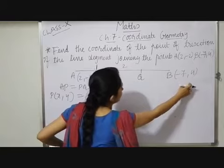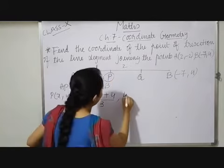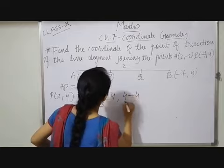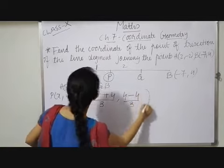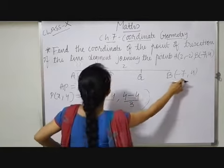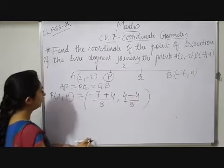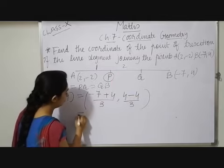Now y axis, 4 into 1 will be 4 minus 2 into 2 minus 4 divided by 3. This one, 4 ones are 4, 2 twos are 4, with minus. So which is equals to,